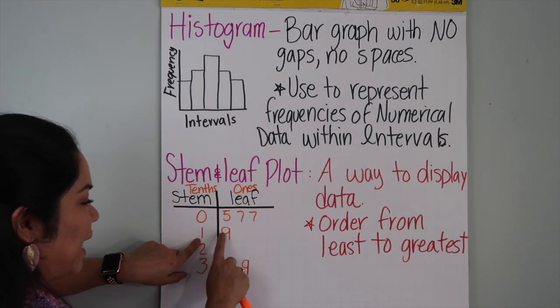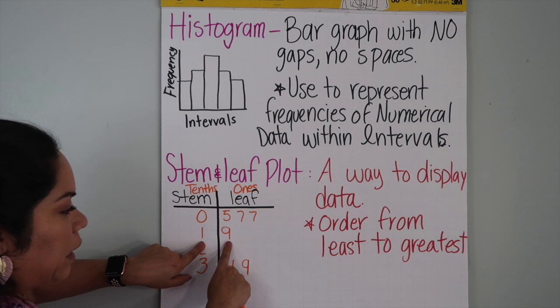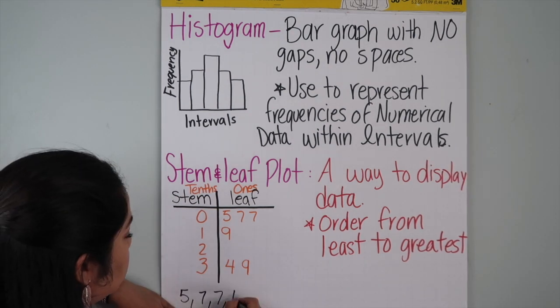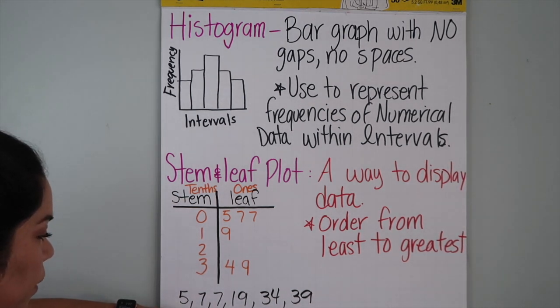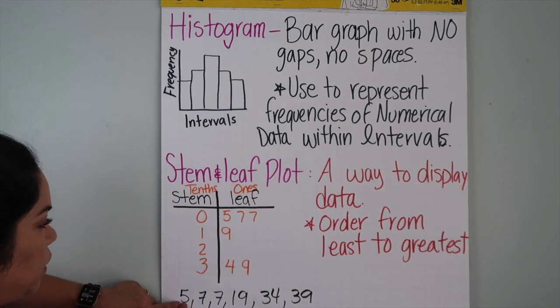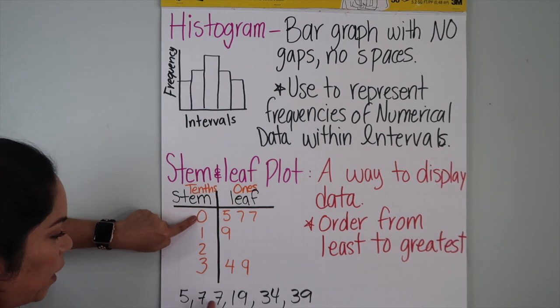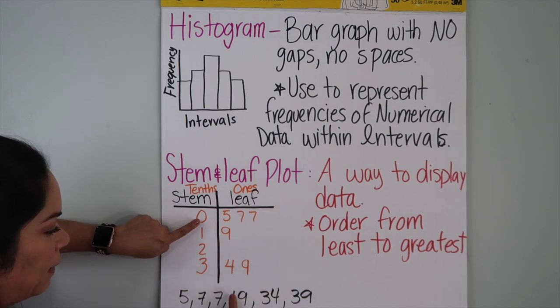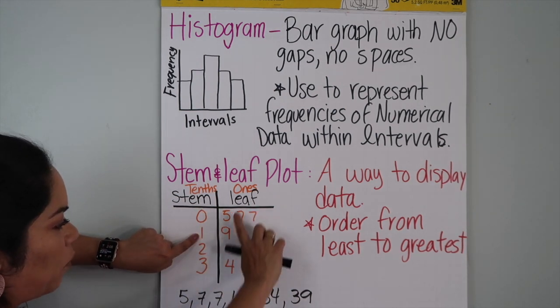Here, your number will be 19, one in the tens place and nine for the ones, that equals nineteen. You don't have any number, so your list of numbers will be five, seven, seven, nineteen. If you put these numbers back in the stem and leaf, you will have zero five, zero seven, zero seven, and then one nine.